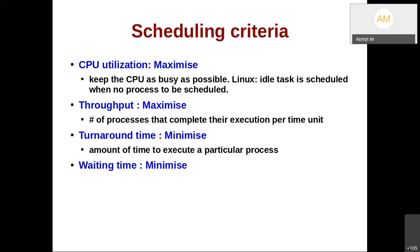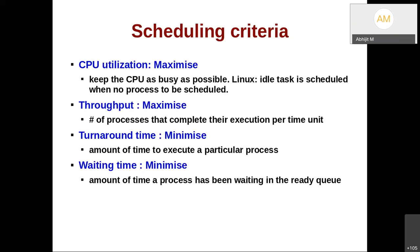Another criterion is waiting time, which should be minimized — it is the amount of time a process spends in the ready queue. Note: this is not IO wait; it is waiting to get scheduled. Reducing waiting time will effectively improve turnaround time. If a process spends no time in the ready queue — waiting time is 0 — then turnaround time is minimized. There is a direct correlation between waiting time and turnaround time.